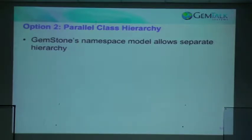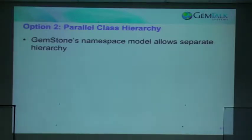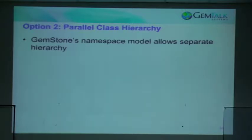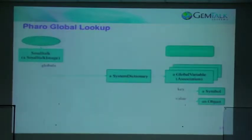Option two is what I'll call a parallel class hierarchy. In most traditional Smalltalks, you have a single namespace. VisualWorks has namespaces where you can have two classes named Array, and GemStone also has this and has had it from the beginning. So we could create a parallel class hierarchy — a class Object, a class Array, a class OrderedCollection, and so on.